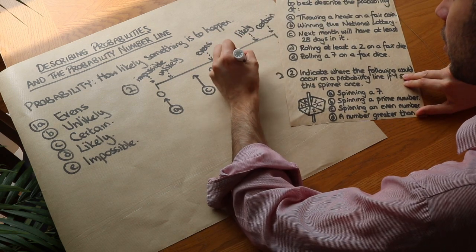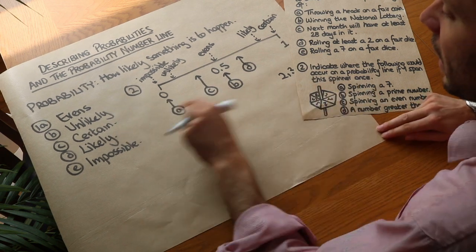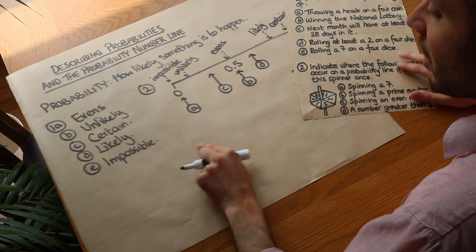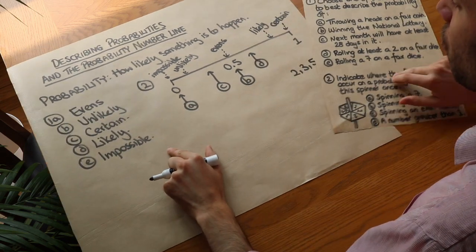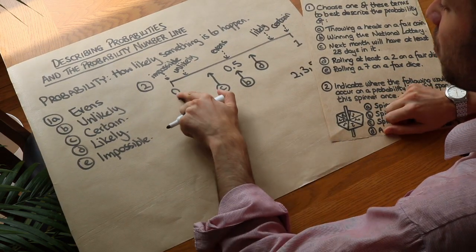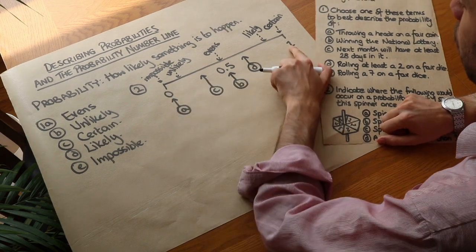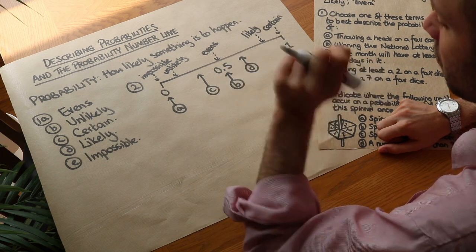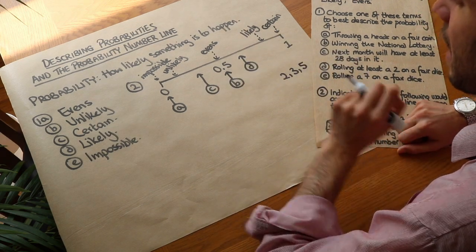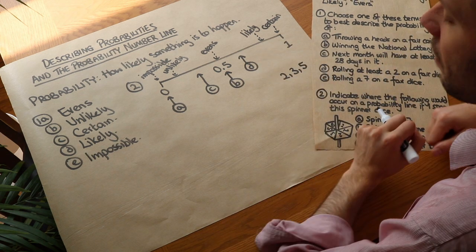So just to summarise, there's two different ways that we can describe probabilities. We can either use key terms such as these. Or we can describe a probability as a number between 0 and 1. Where 0 means absolutely impossible. 1 means absolutely certain. And 0.5 would be a half chance, which we call evens. And that means it's just as likely to happen as it is to not happen. Like throwing a fair coin, for example.